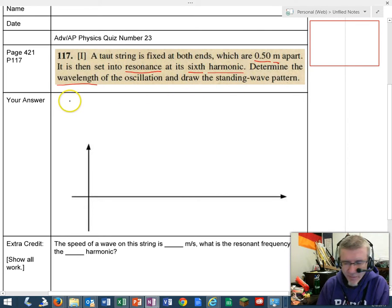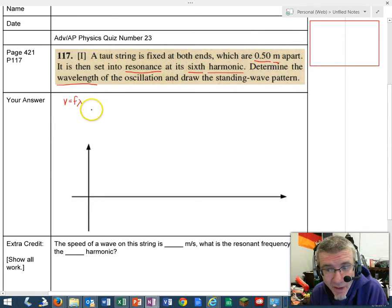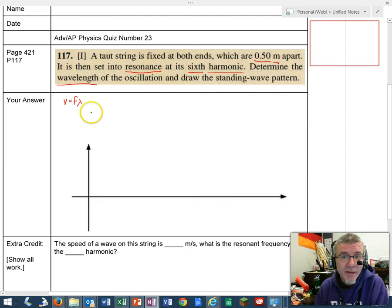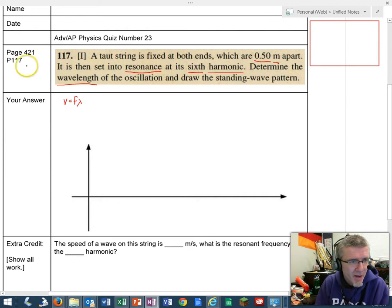We have a couple of equations we can use. Velocity equals frequency times wavelength for a wave. We know that a standing wave is one wave traveling one direction on the string and another wave traveling the other direction on the string. There's a special condition about how those waves combine on a string of length L.